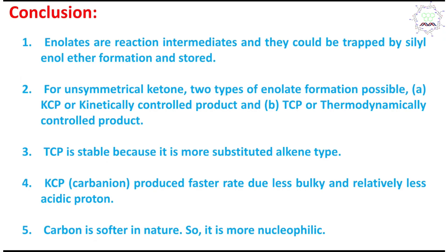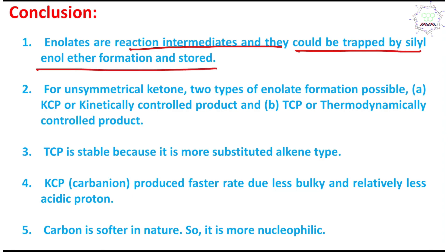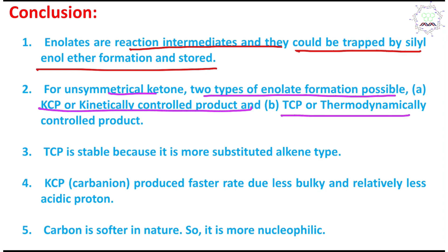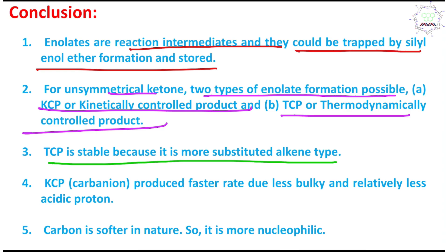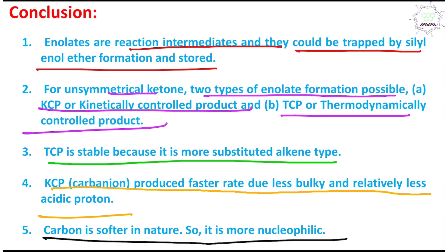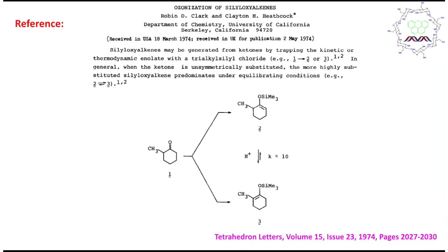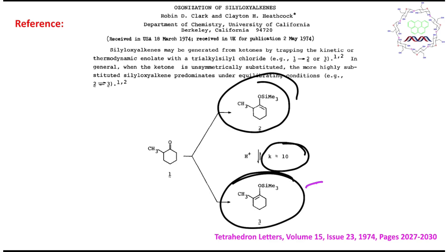In conclusion, what you have learned: enolates are reaction intermediates and they could be trapped using silyl enol ether formation and stored. For an unsymmetrical ketone, two types of enolate formation are possible — one is KCP, kinetically controlled product, and another is TCP, thermodynamically controlled product. TCP is more stable because it is the more substituted alkene type — so according to Zaitsev's rule, it is stable. KCP or the carbanion is produced faster due to less bulky and relatively more acidic proton. Finally, the carbanion is softer in nature, so it is more nucleophilic. This is the reference from which I have taken this, and you can see the equilibrium constant K is near about 10 — meaning it is slow, but it happens. The equilibrium is shifted towards the product side — the TCP side.